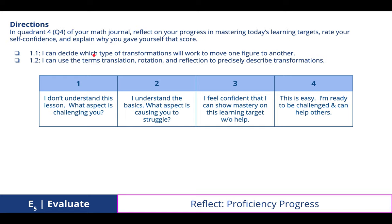In quadrant four of your math journal reflect on your progress in mastering today's learning standards, rate yourself confidence and explain why you gave yourself that score. Reviewing those two learning targets: I can decide which type of transformations will work to move one figure to another, and I can use the terms translation, rotation, and reflection to precisely describe transformations. So were you at level 1, 2, 3, or 4?